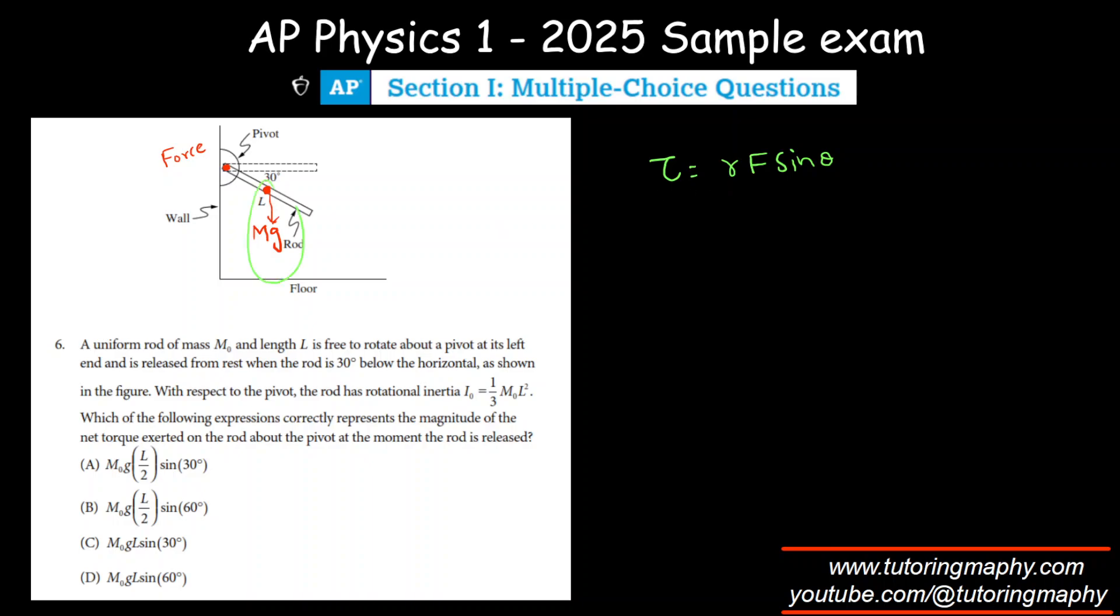We just have one force, mg, acting at the center of mass, which is at the center. So mg times the distance, which is L/2. So r is L/2, F is mg. Now the question is, what is the angle between these two?